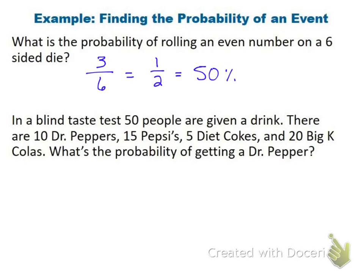The second problem is a blind taste test: 50 people are given a drink — 10 Dr. Peppers, 15 Pepsis, and others. What's the probability of getting a Dr. Pepper? There are 10 Dr. Peppers out of 50 total drinks, so that reduces down to one-fifth, or 20%.